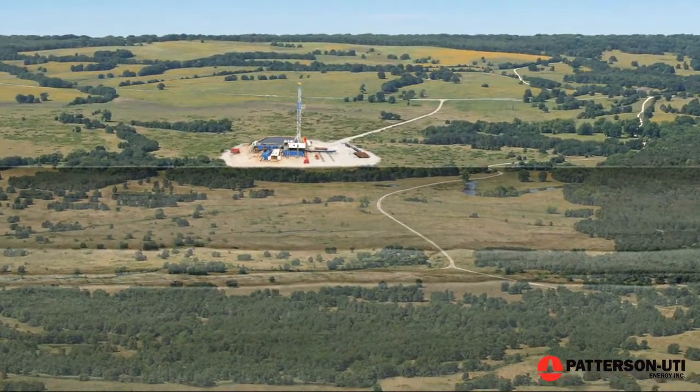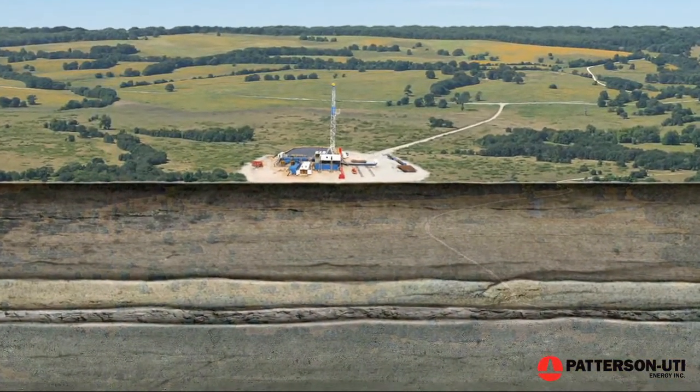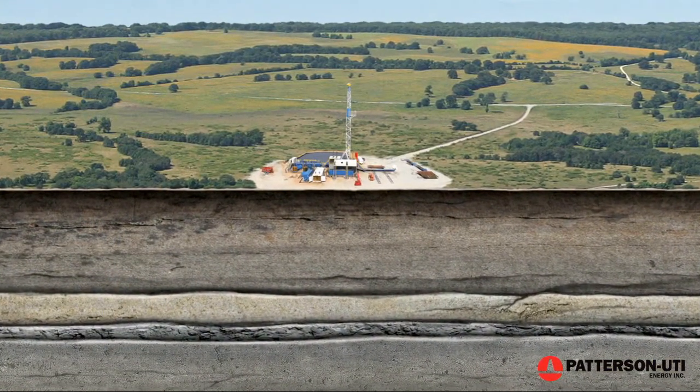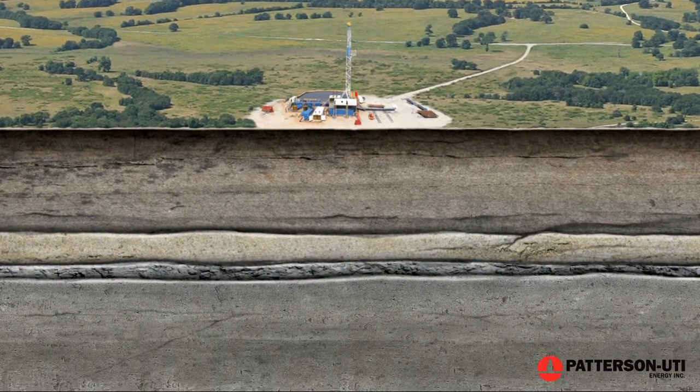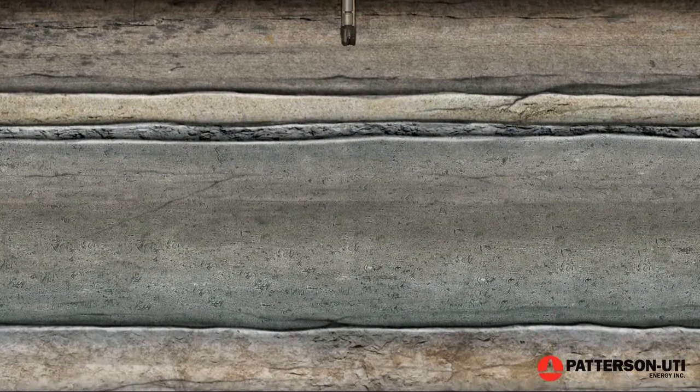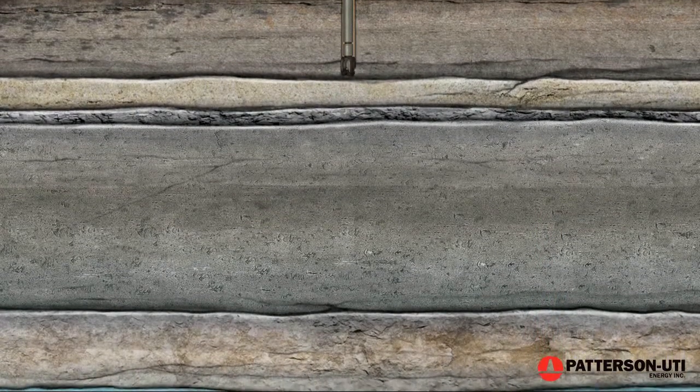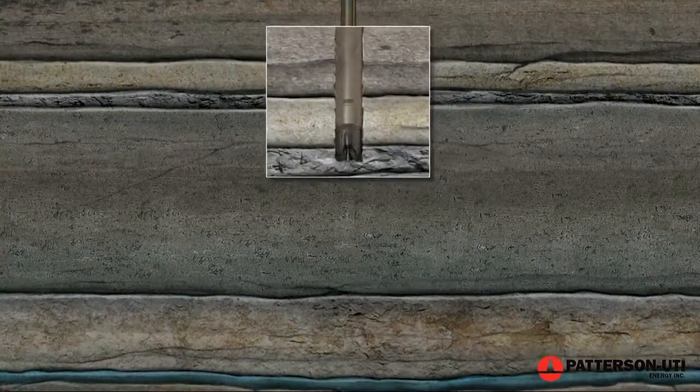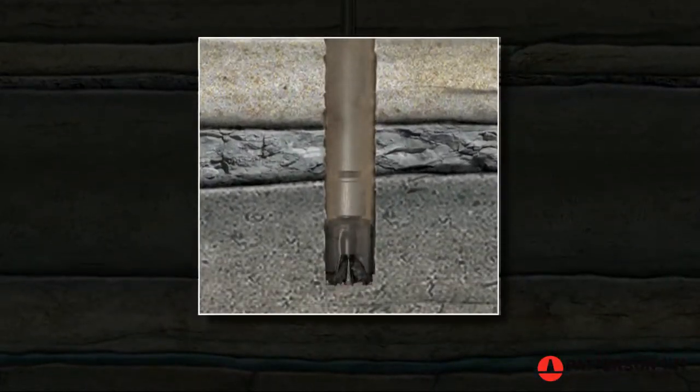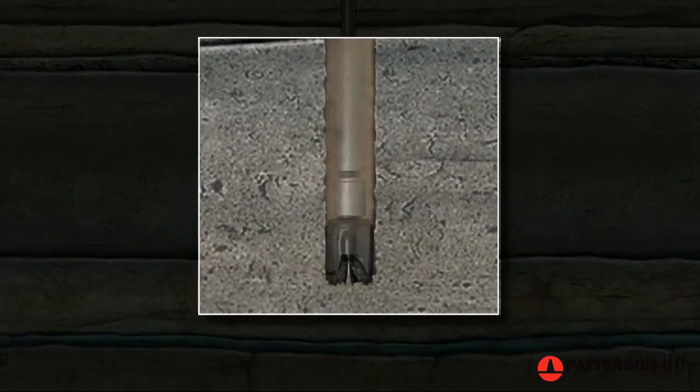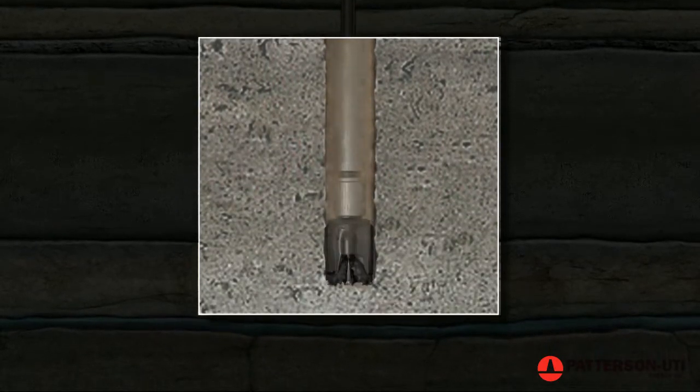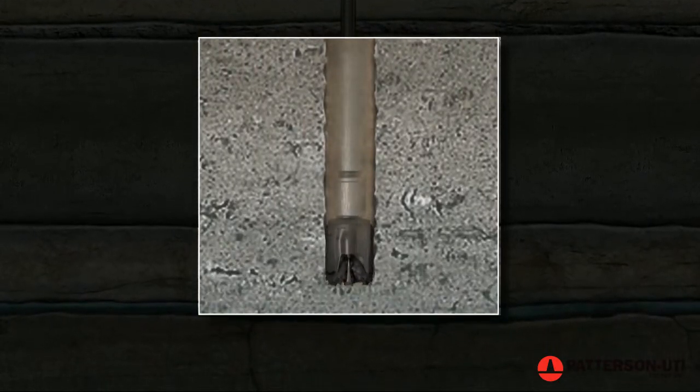Let's take a look at the horizontal drilling and stimulation processes that have made shale exploration so successful. A drill bit is mounted on the end of the drill pipe. As the bit grinds away, a mixture of water and additives called mud is pumped into the hole to cool the bit and flush the cuttings to the surface.